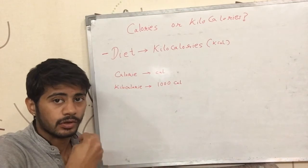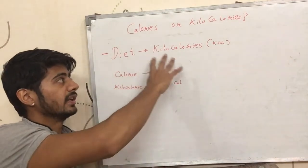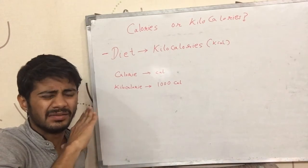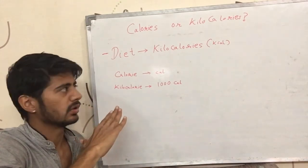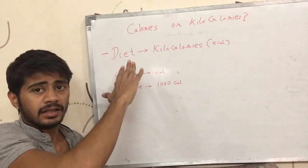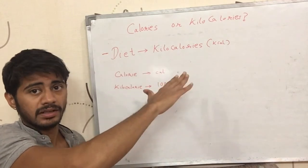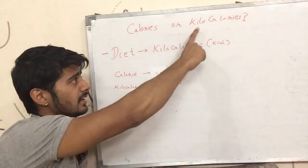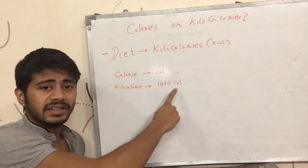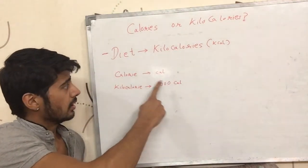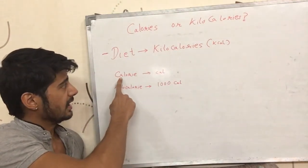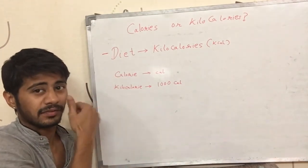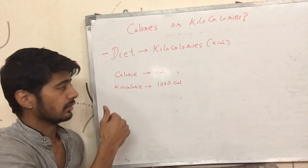When we are talking about human food, we are talking about kilocalories. We never talk about small calories when talking about human food or human diet. One kilocalorie has 1000 calories — I would call the calorie a small calorie and the kilocalorie a big calorie, just for the purpose of understanding.